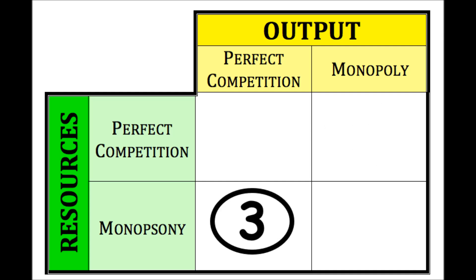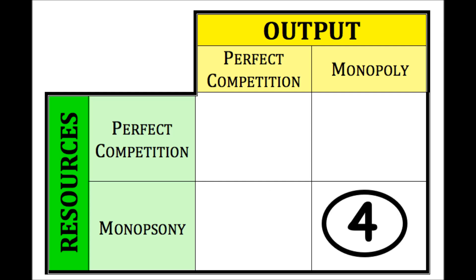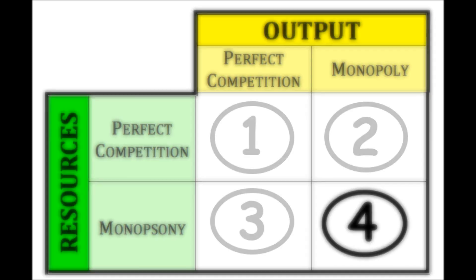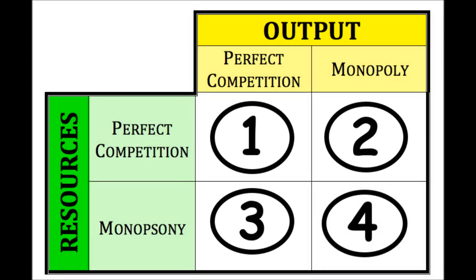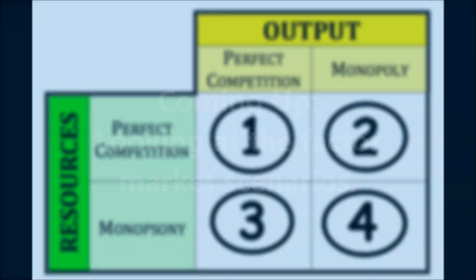Three: a perfectly competitive output market with a monopsony resource market. And four: a monopoly product market with a monopsony resource market. Coming up: looking at the factor market scenarios.